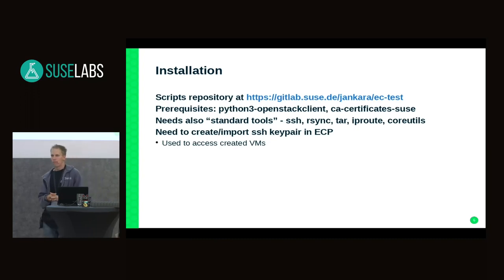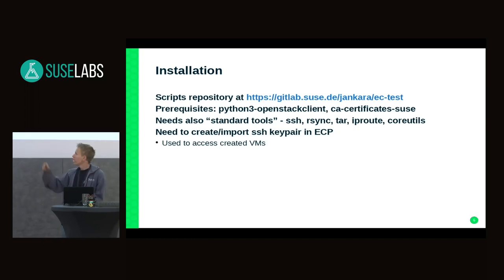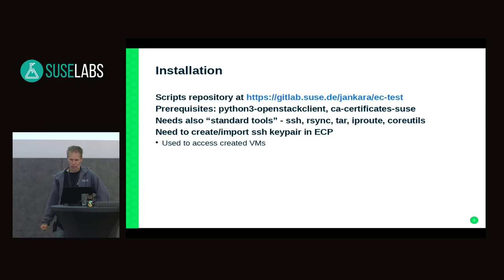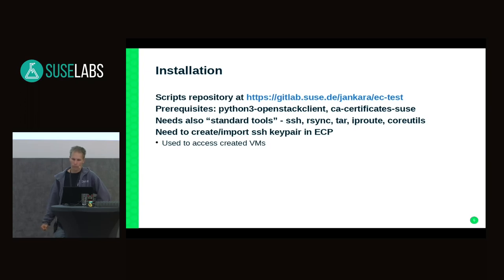To use this set of scripts, first you need to download them from my GitLab repository — the URL is in the slides and in the proceedings. You need to install two prerequisites: the Python OpenStack client and SUSE certificates needed to access the control nodes of the cloud. The rest is standard tools like rsync, ssh, tar, and iproute, which should already exist on any developer machine.